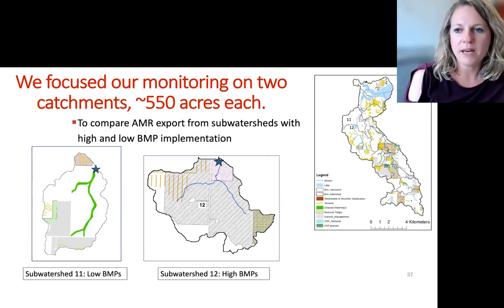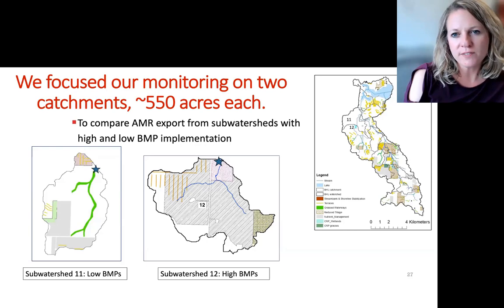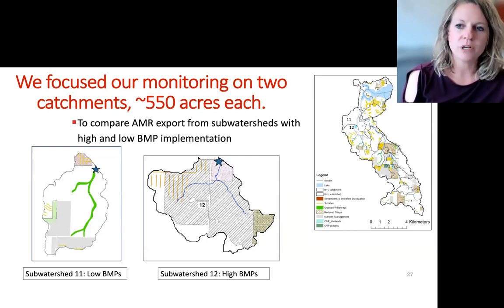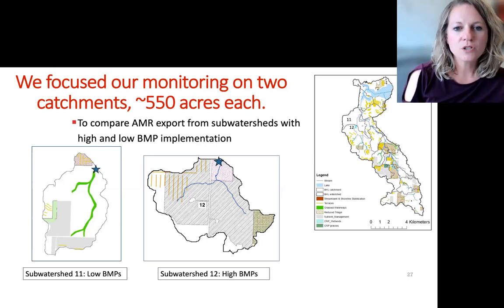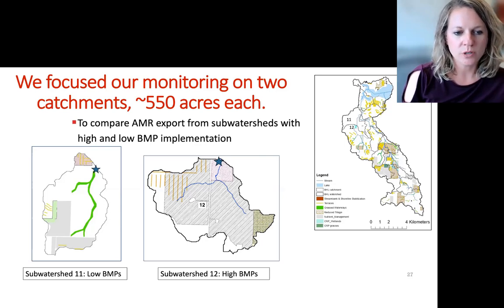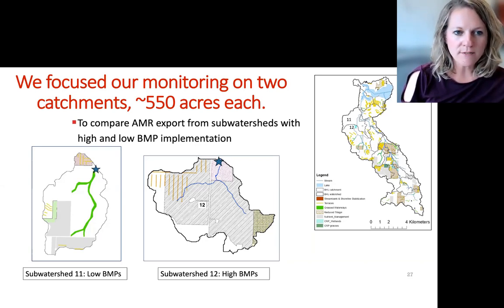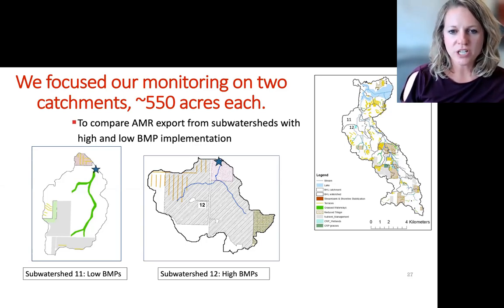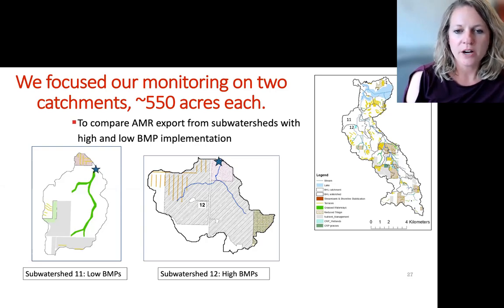We have two sub-watersheds — 11 and 12 — right next to each other, around 550 acres each. This sets up a paired watershed study with two sites that have very similar geology, soils, and hydrology. We've been able to monitor these over time and see differences in export of antimicrobial resistant genes from these two watersheds. Sub-watershed 11 has a low level of BMP implementation, while sub-watershed 12 has a really high level of BMP implementation — nearly comprehensive conservation practices throughout almost the entire aerial extent.